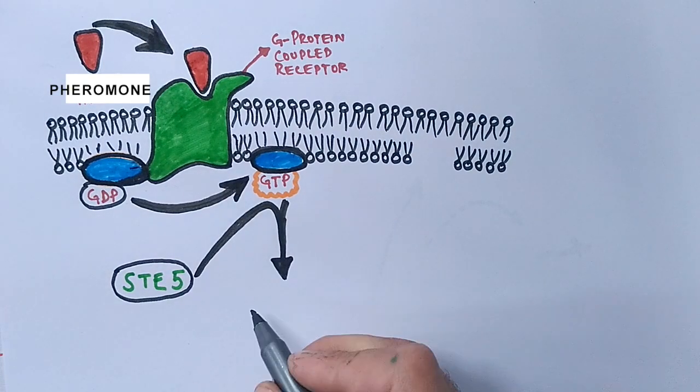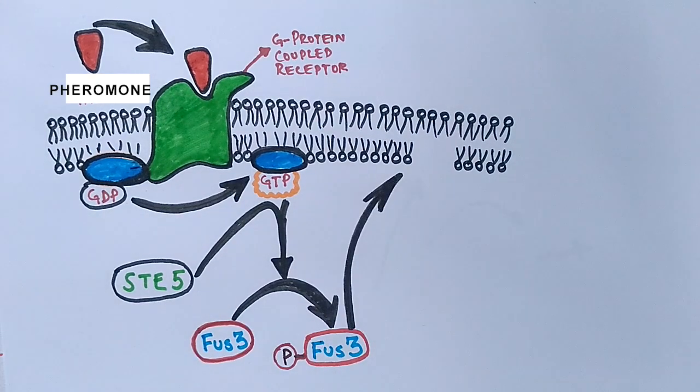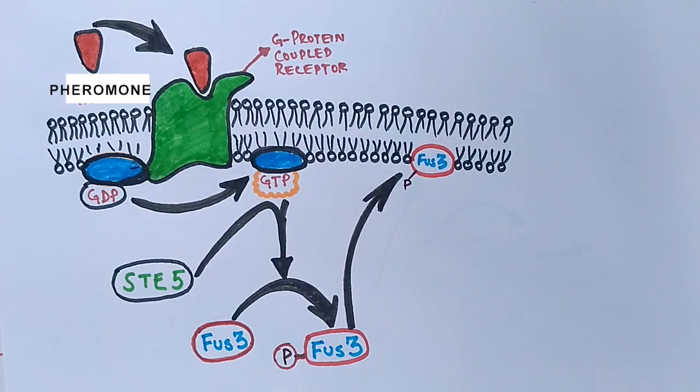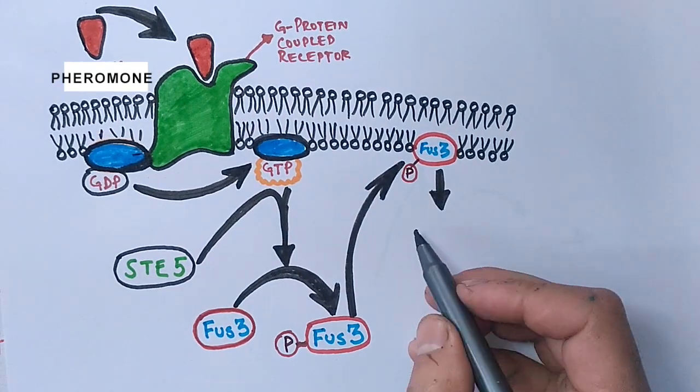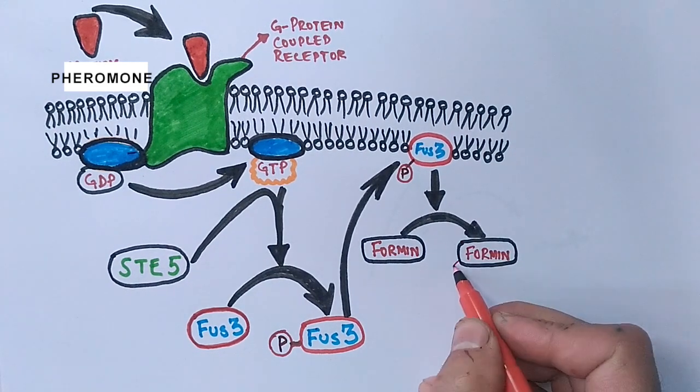The first protein to be phosphorylated is the FUS3 protein. After that, the phosphorylated FUS3 protein moves towards the plasma membrane, and here at the plasma membrane site, the FUS3 protein phosphorylates the formin protein, thus activating the formin protein.